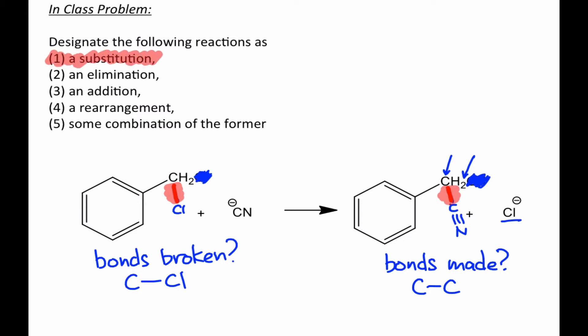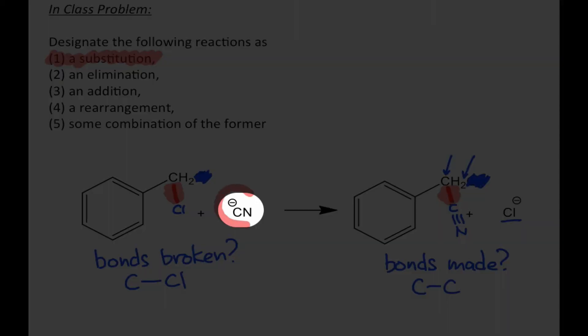More specifically, it's an example of a nucleophilic substitution because the reagent doing the substituting, the cyanide anion, is a nucleophile.